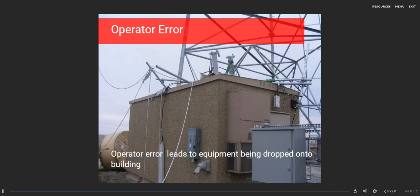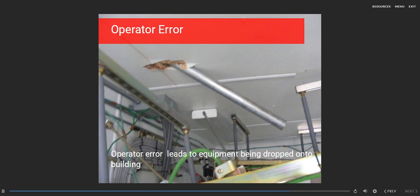In this instance, the capstan accident resulted in the aerial equipment falling onto the building. Here is the inside view of a mount pipe which fell through the roof of the equipment building.